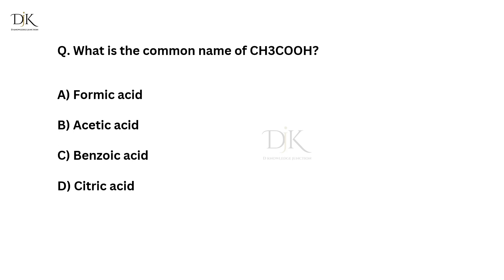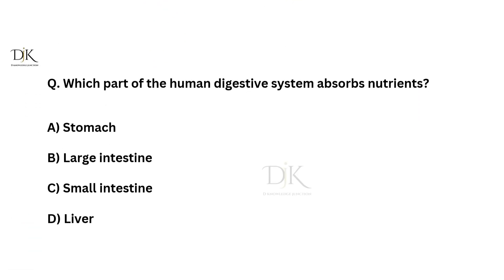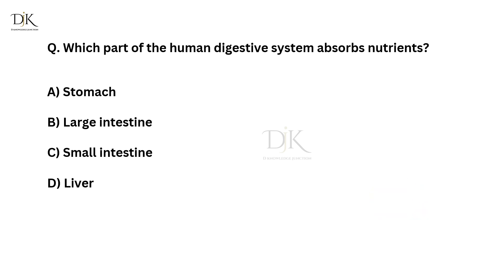What is the common name of CH3CH2OH? The right answer is acetic acid. Which part of the human digestive system absorbs nutrients? The right answer is small intestine.